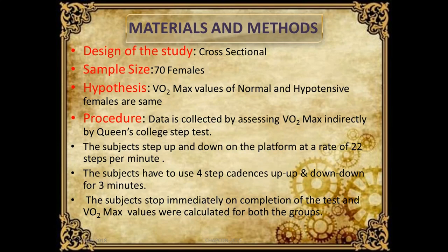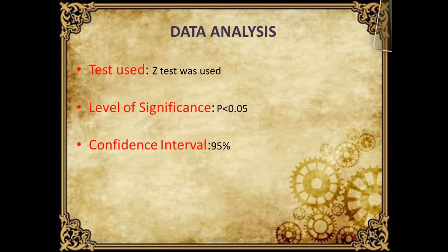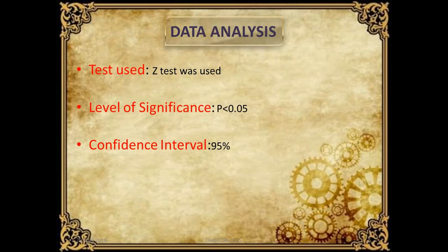In the Queen's College Step Test, the subject steps up and down on a platform at a rate of 22 steps per minute, using a four-step cadence — up, up, down, down — for three minutes. The subject stops immediately on completion of the test and VO2 max values were calculated for both groups. The statistical test used was the Z-test, with a level of significance of less than 0.05 and a confidence interval of 95%.